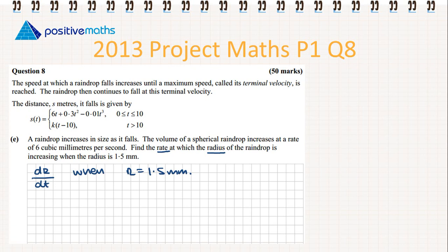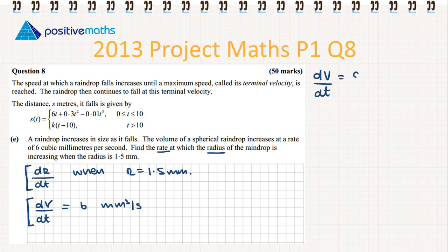The volume increases at a rate of 6 mm³/s, so dV/dt = 6. We have dV/dt and we are looking for dr/dt, so there is a missing piece: dV/dr. We will use the chain rule: dV/dt = (dr/dt) × (dV/dr), so dr/dt = dV/dt ÷ dV/dr. We need an equation relating volume and radius.